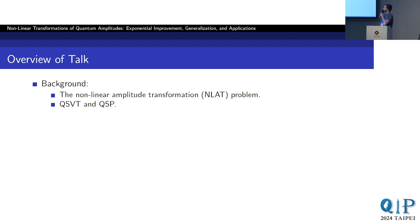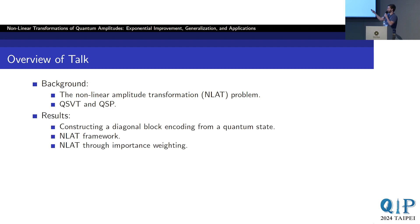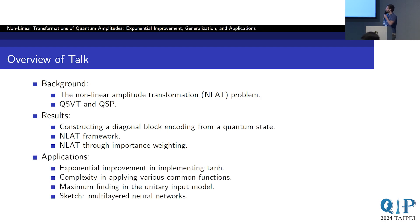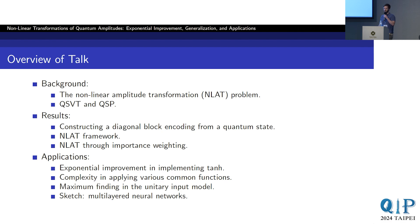So first, an overview of the talk. I'll briefly describe what the nonlinear amplitude transformation problem is. I'll describe the techniques we use to solve this problem, namely quantum singular value transform and quantum signal processing. Then I'll give an overview of the results in the paper, and then I will talk about the applications of our techniques — in particular, that we obtain an exponential improvement in applying the function tanh over prior work. Then I'll discuss the complexity of applying various common functions to arbitrary quantum states, maximum finding in the unitary input model, and how to use this nonlinear transformation procedure to implement activation functions for neural networks.